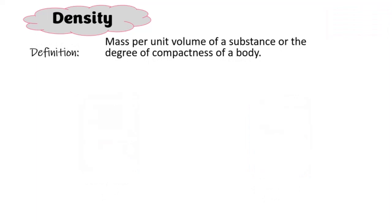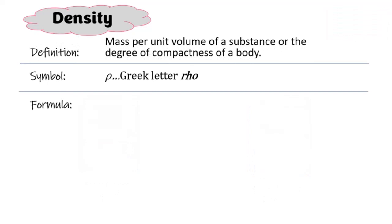So we've covered the definition: mass per unit volume of a substance, or the degree of compactness of a body. Now let's explore the symbol of density. It's the rho - a Greek letter. It looks like a 'p' but it's not quite a 'p'. How do we calculate density? A key thing I usually say is your definition oftentimes helps you to derive or deduce your formula.